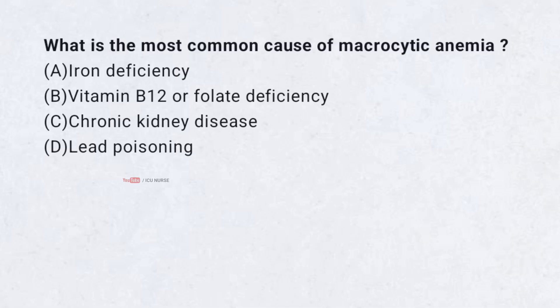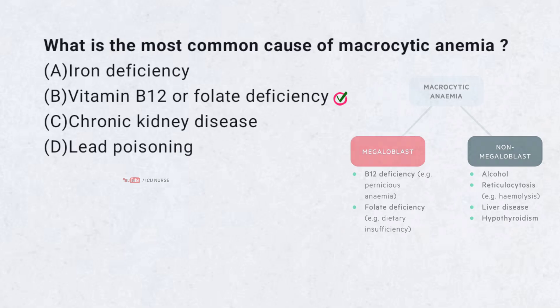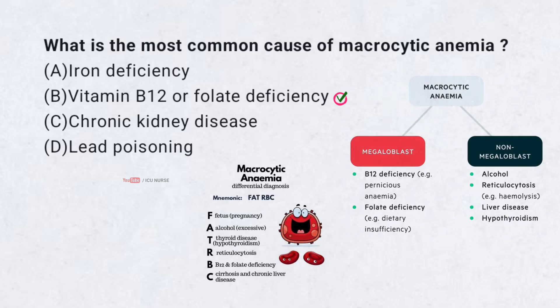What is the most common cause of macrocytic anemia? A. Iron deficiency, B. Vitamin B12 or folate deficiency, C. Chronic kidney disease, D. Lead poisoning. Correct answer: B. Vitamin B12 or folate deficiency. These vitamins are essential for DNA production in RBCs; without enough B12 or folate, cells cannot divide properly, leading to macrocytosis.